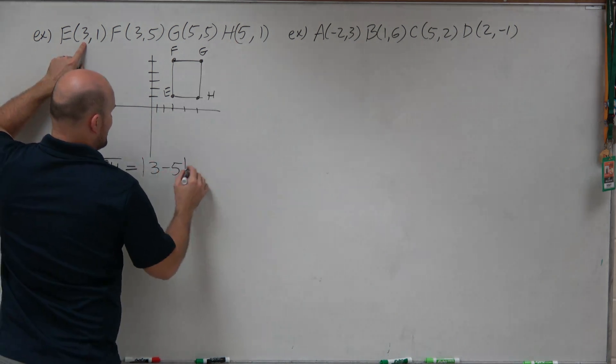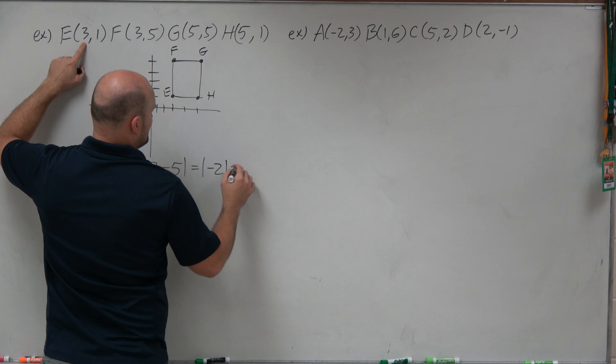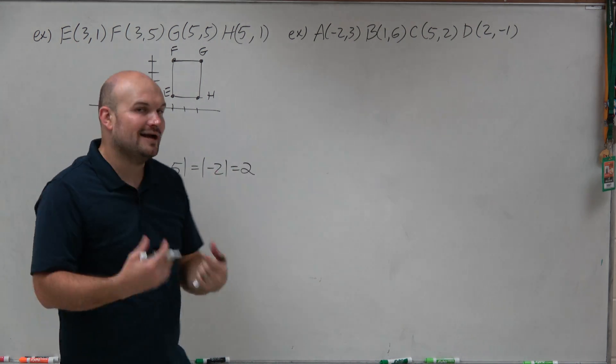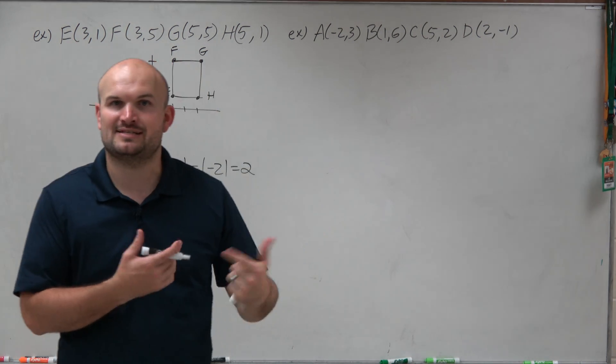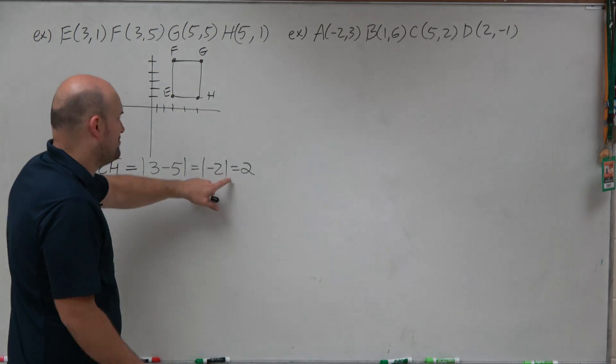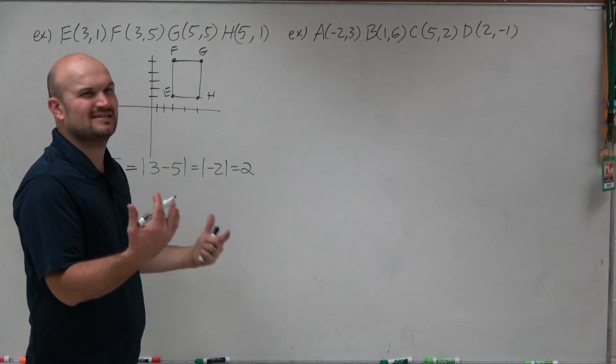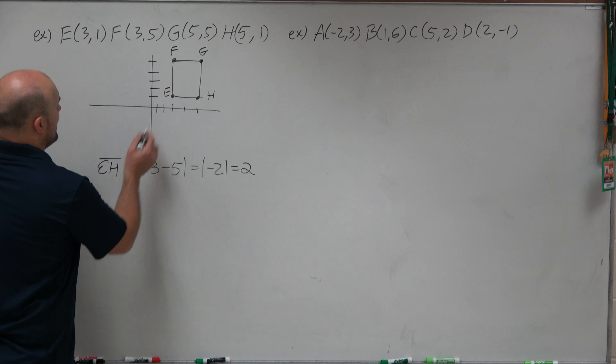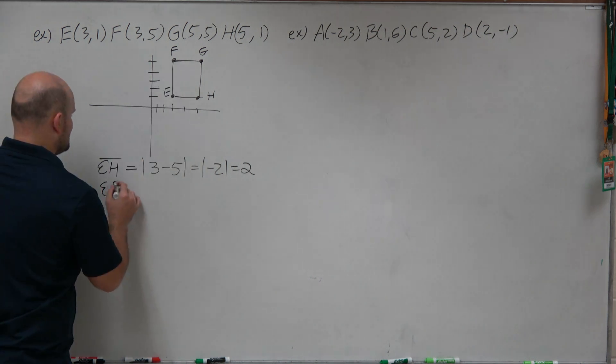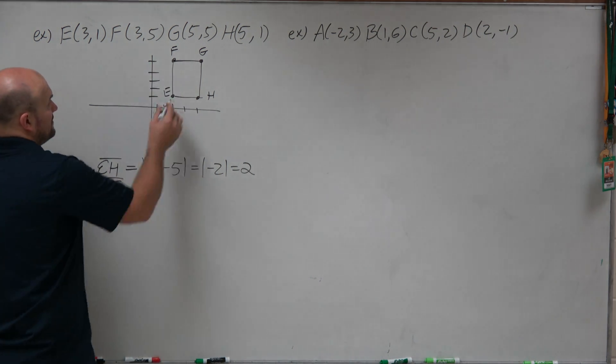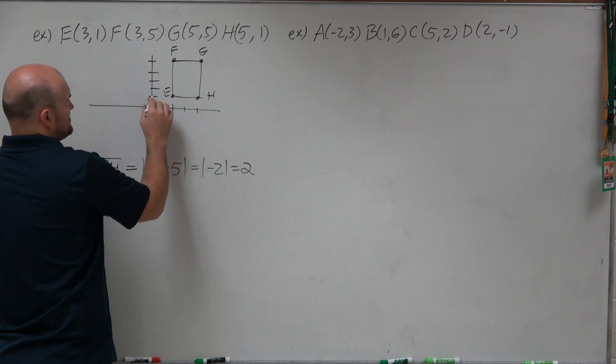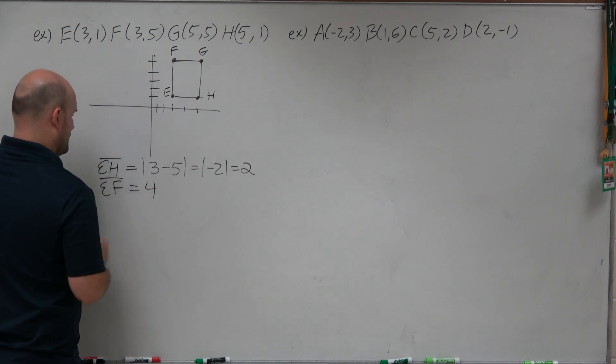We could go back to our number line theory, if you remember, and really look at that. EH is the difference of our x-coordinates. So I go from E to H and find the difference: absolute value of 3 minus 5, which equals negative 2, which equals 2. I know it's much easier just to look at the graph and say it's 2, but I just want to go back—that was something we learned before. And then EF is going to be our height. If we find EF, we could just count that: 1, 2, 3, 4. That's equal to 4.